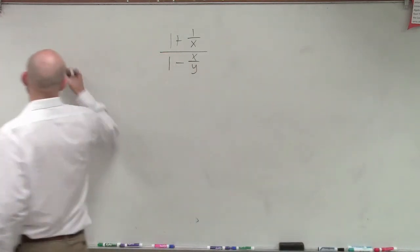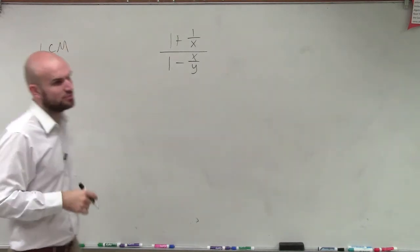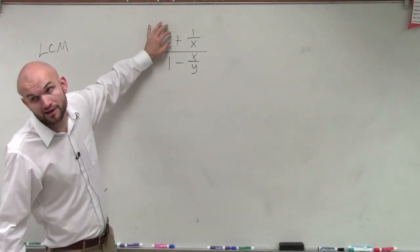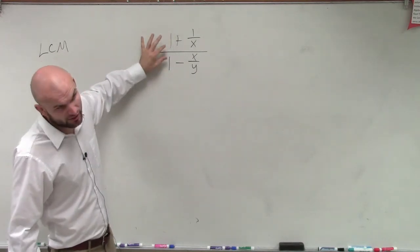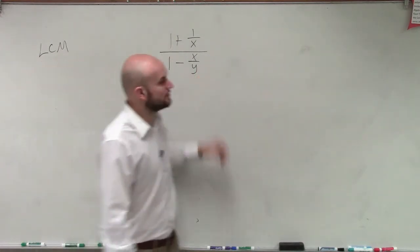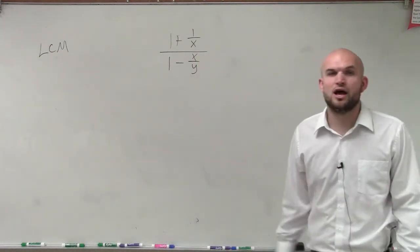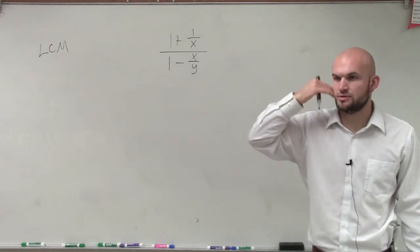So let's determine what the LCM is. What is the least common multiple for all of our denominators? Remember this can be rewritten as 1 over 1. And this can be rewritten as 1 over 1. So if we look at all of our denominators, what is going to be the smallest number that every single one of them can divide into?